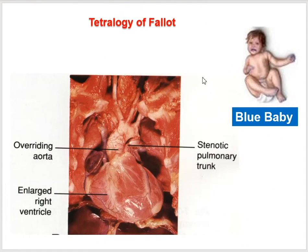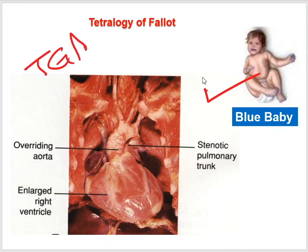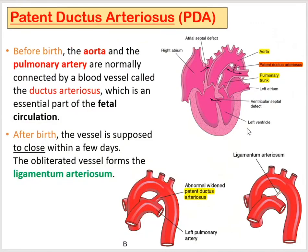Tetralogy of Fallot is one of the heart defects that causes cyanosis — a blue baby. Both transposition of the great arteries and tetralogy of Fallot cause cyanosis and blue babies.